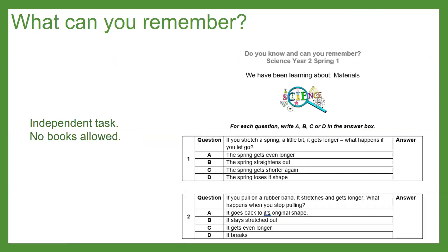Your first task for this lesson today is to complete your multiple choice quiz. This is an independent task. An adult can read the questions to you if you need that, but they won't be able to help you answer any of the questions or tell you the correct answer. You can't use your books, and I don't want you going online to find out the answers either. Try and do it from memory — see if you can remember all the fantastic learning you've been doing.